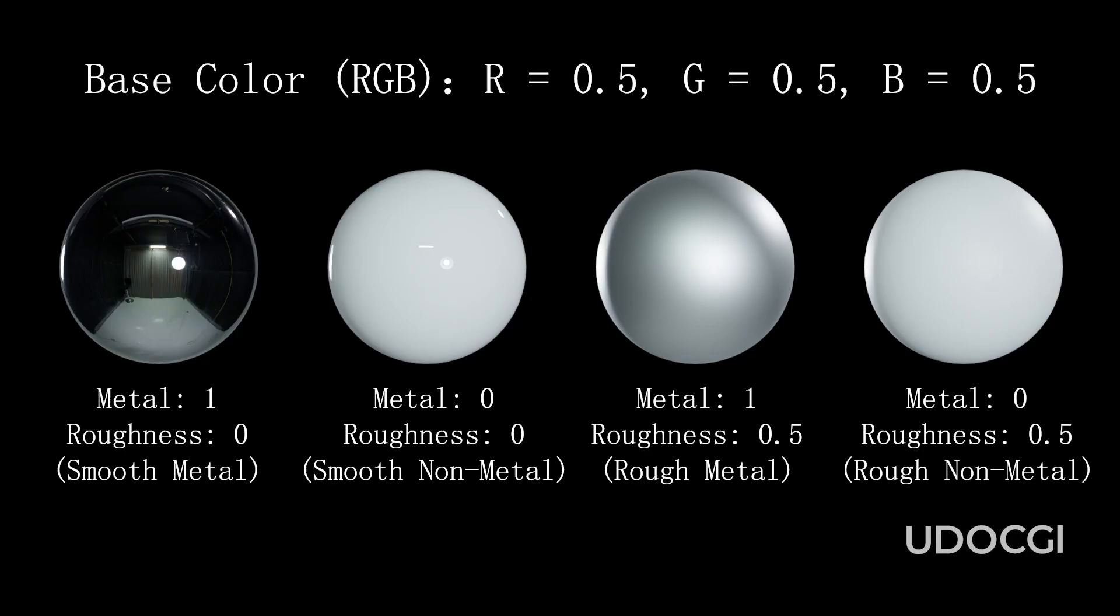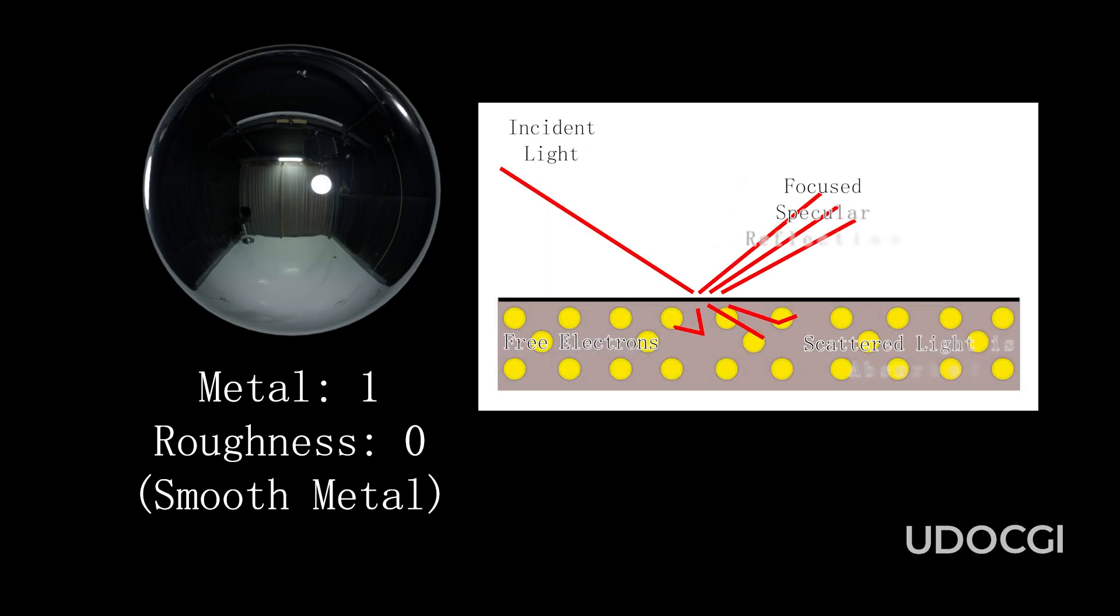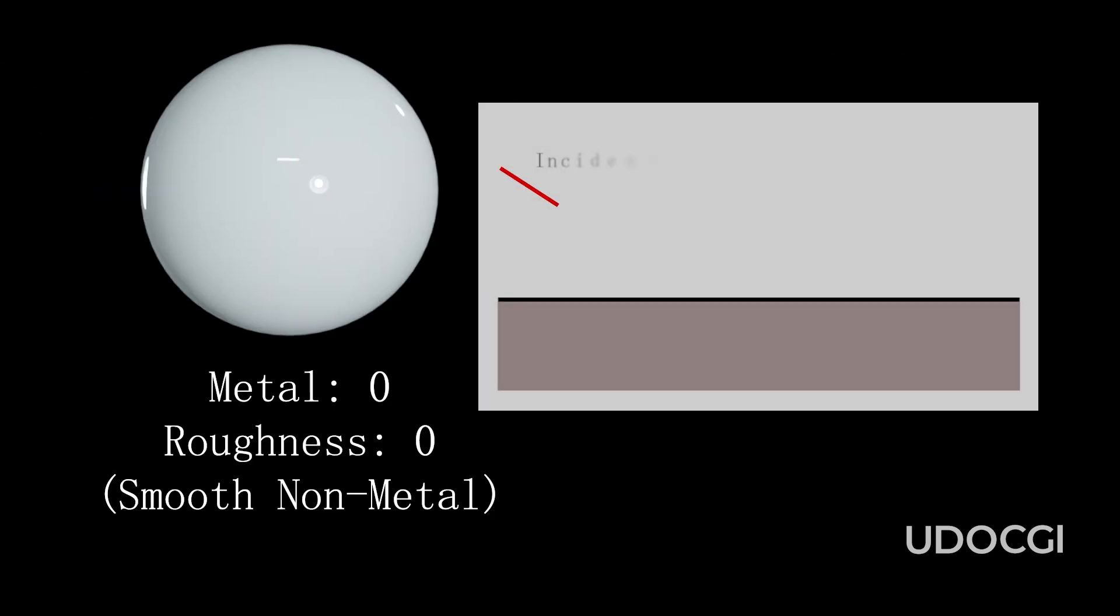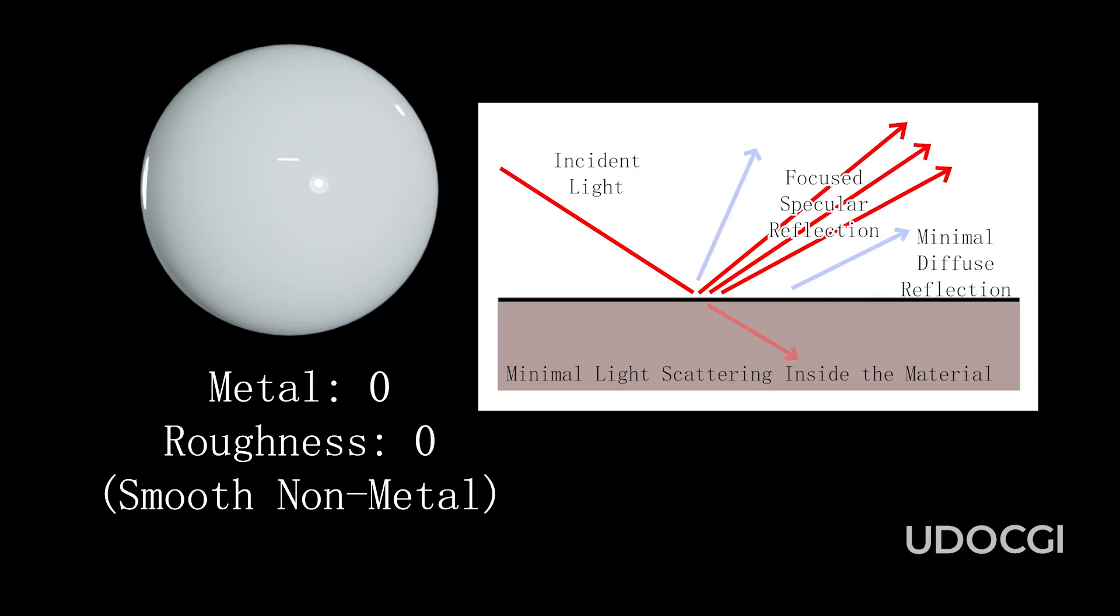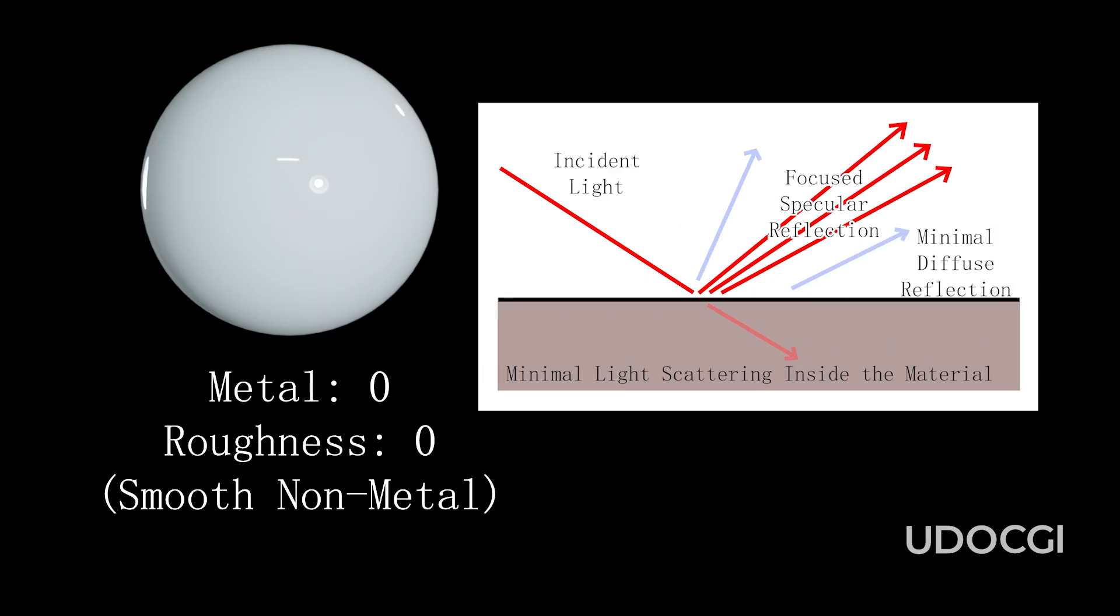Let's take a look at how light behaves differently on metal and non-metal spheres with varying roughness settings, showing the effects on reflections and surface appearance. This sphere has a metallic setting of one and roughness of zero, creating a mirror-like reflection. Metals absorb and reflect light sharply, resulting in a clear, intense reflection in a metallic gray. If we turn off metallic by setting it to zero but leave roughness at zero, the sphere will have a glossy, polished surface. Non-metals diffuse light rather than reflecting it sharply, leading to neutral, less intense highlights compared to metals.